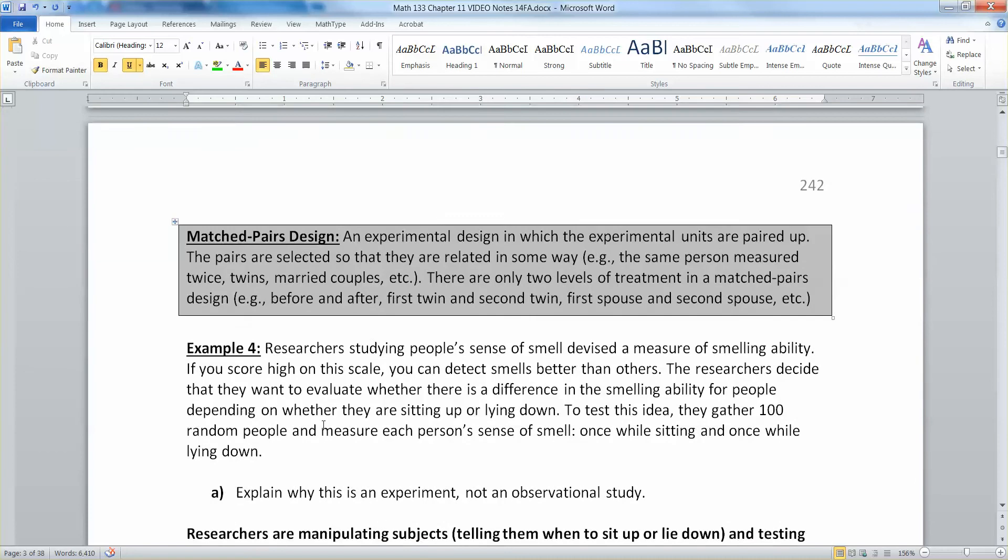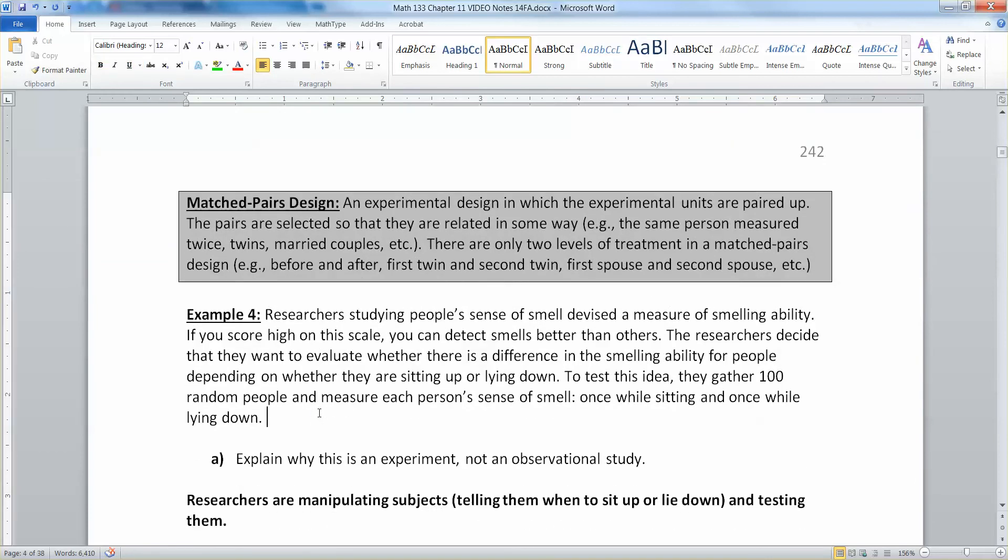Now let's talk about a very important design to us for chapter 11, which is the matched pairs design. So this is a special kind of experimental design in which the experimental units are paired up. The pairs are selected so that they are related in some way. Often this will be the same person measured twice. So they'll have you do a pre-test and a post-test. Or they'll have twins, identical twins, or sometimes fraternal twins, married couples, husband and wife, sister and brother. There are only two levels of treatment in a matched pairs design. Before and after, first twin, second twin, first spouse, second spouse.